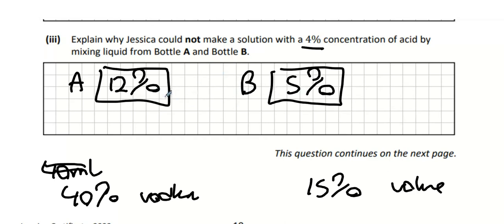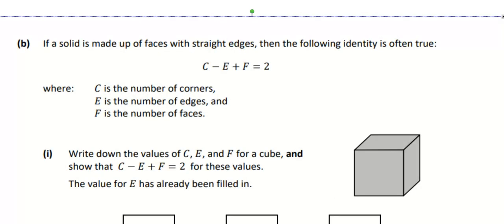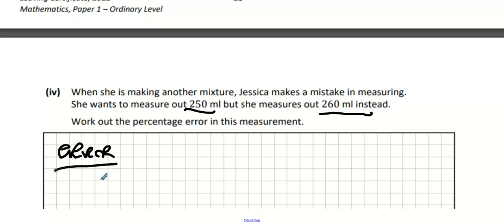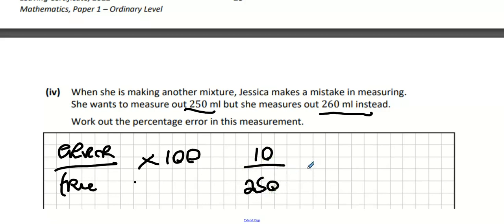It has to be between 5 and 12 percent. For the next part — percentage error — Jessica wants to measure 250ml but measures 260 instead. Percentage error equals error over true value multiplied by 100. The error is 10, the true value is 250, giving a 4% percentage error.